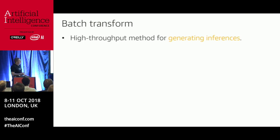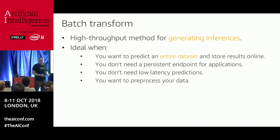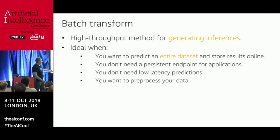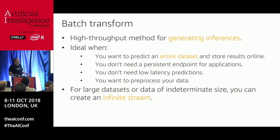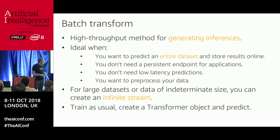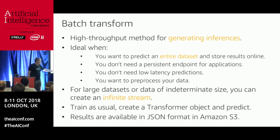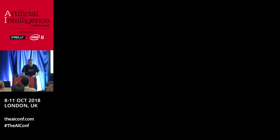Batch transform is exactly what you'd think — running batch predictions. If you need to predict a full dataset, say 100 terabytes, you're not going to HTTP POST 100 terabytes. If you don't need real-time prediction or low latency, or if you need to run a lot of preprocessing before prediction, it's a good solution. You can even create an infinite stream — a batch prediction that never ends — for very large or streaming datasets. You train as usual, create a Transformer object from the SageMaker SDK, and get your results in JSON format in S3.